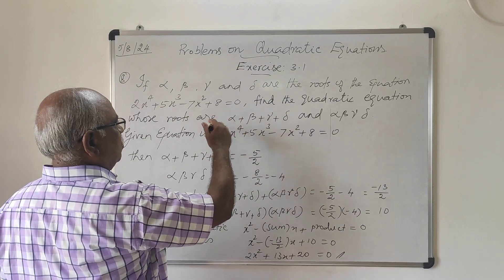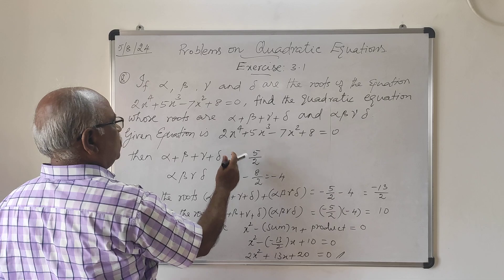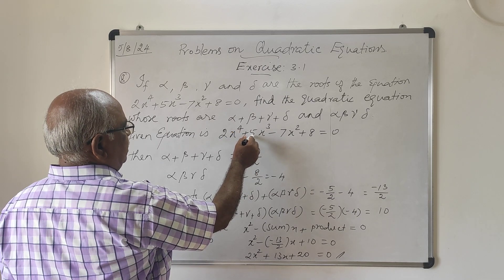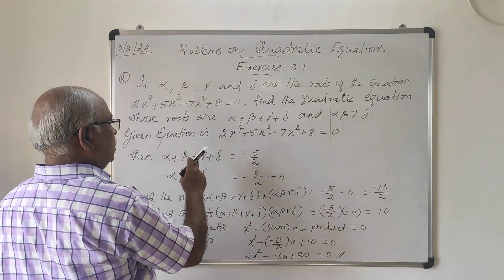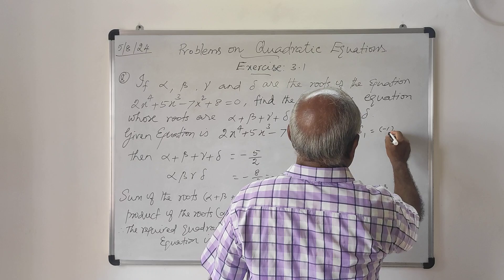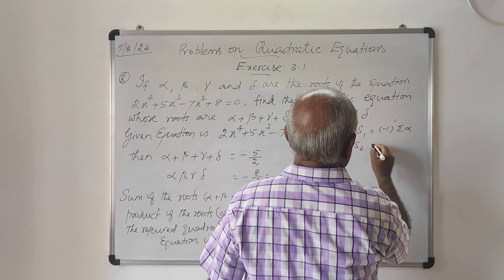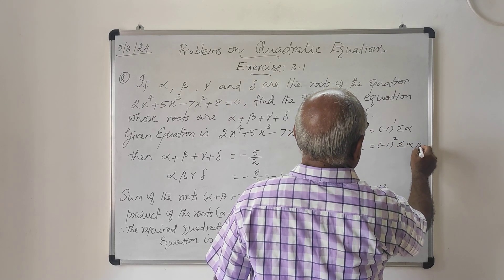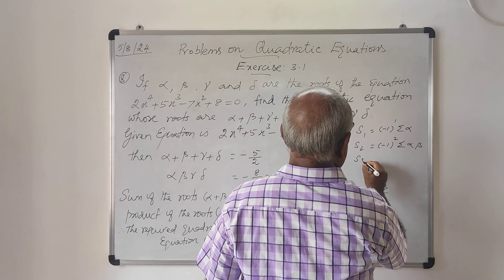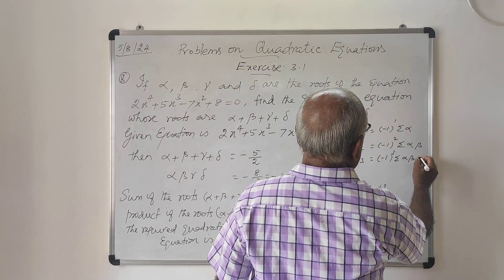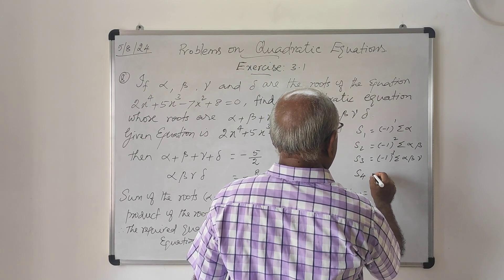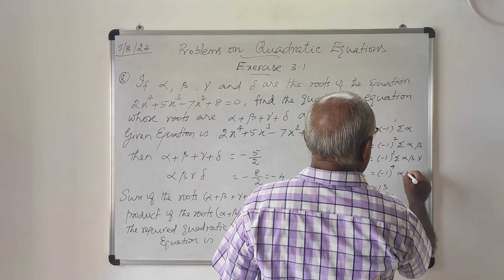Then, the sum of roots α+β+γ+δ is equal to −b/a, which is S1 = σα. For a fourth degree equation: S1 = (−1)¹ σα, S2 = (−1)² σαβ — the sum of products of double roots. S3 = (−1)³ into the summation of products of three roots, like αβγ + αγδ + ... And S4 = (−1)⁴ αβγδ.